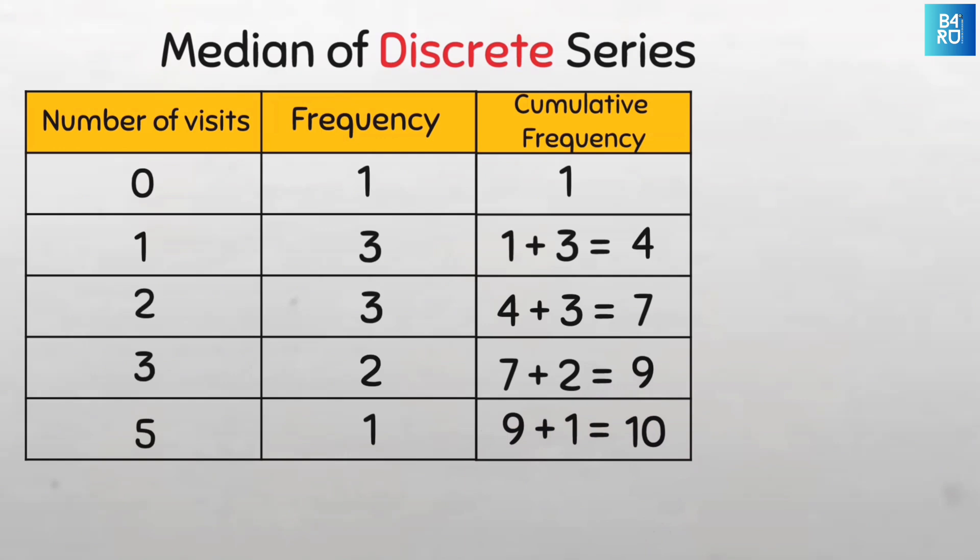So to confirm if your cumulative frequency calculation is correct, the last cumulative frequency should be the total of all the frequencies. So we can see here it is 10 and here too we have 10. And when we add all the frequencies, we confirm the information that we have in the question that says we have 10 children. Remember the question says we have 10 children, so our n is 10.